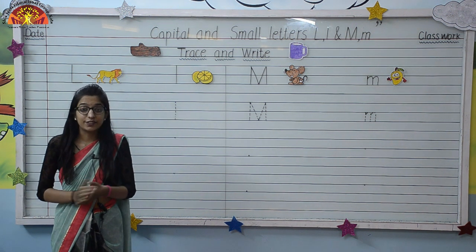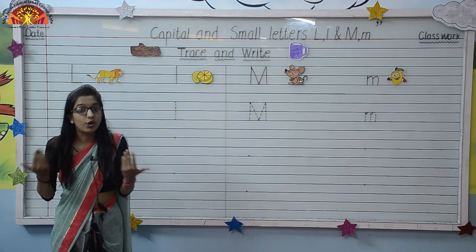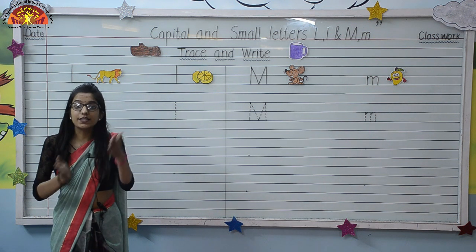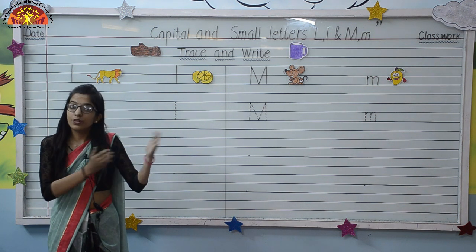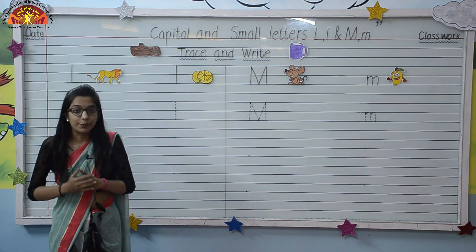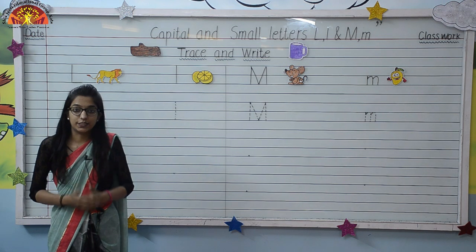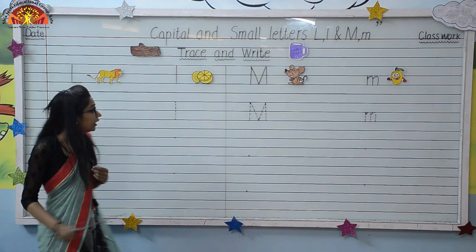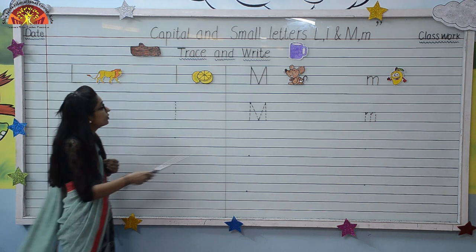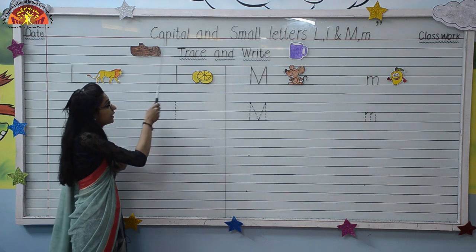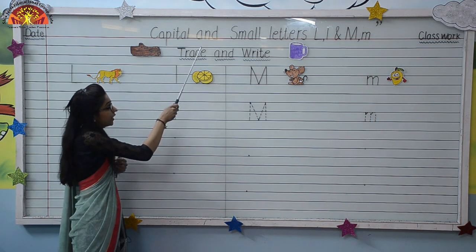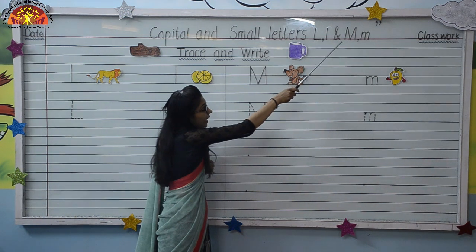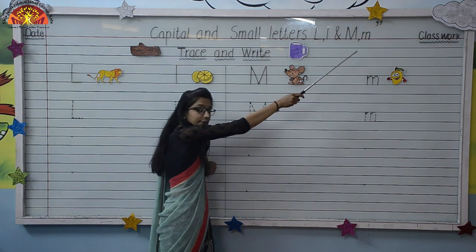So kids, in the previous classes we have already learned about capital and small letters A to K. So today we will learn to trace and write capital and small letters L and M.